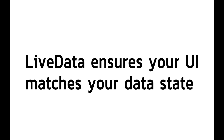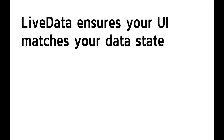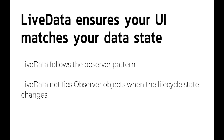Number one: live data ensures your UI matches your data state. Live data follows the observer pattern and notifies observer objects when the lifecycle state changes. You can consolidate your code to update the UI in these observer objects. Without them, you'd have to update the UI every single time your app data changes — every new query, every data change from the service or database cache. Methods can become entangled with other methods very quickly. Overall, live data and MVVM lead to a much cleaner code structure.